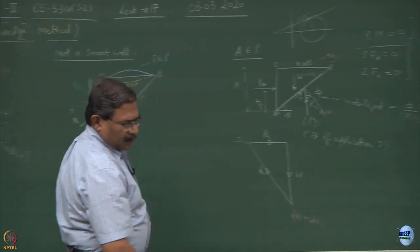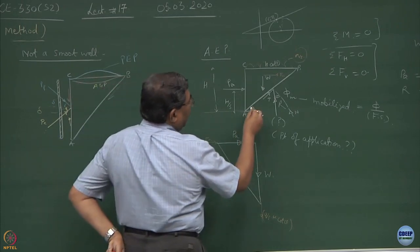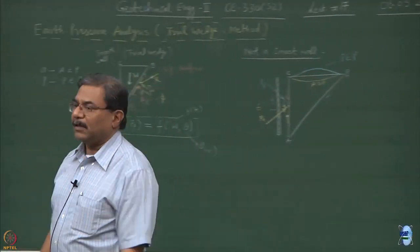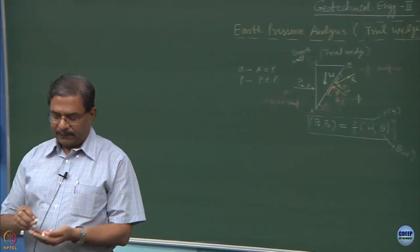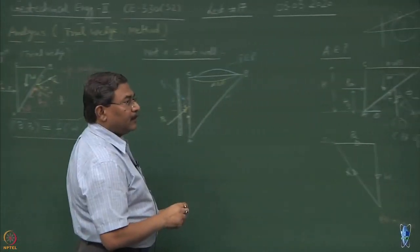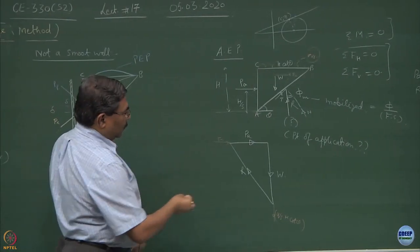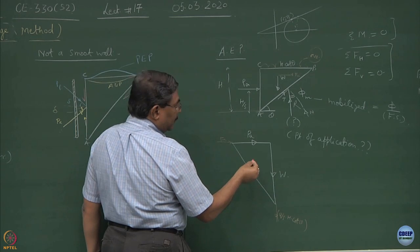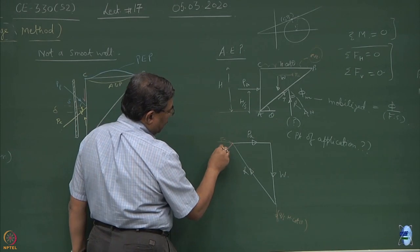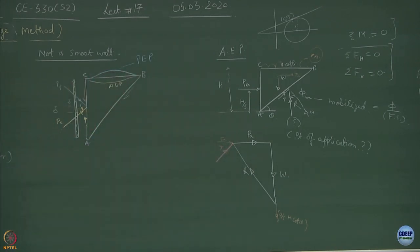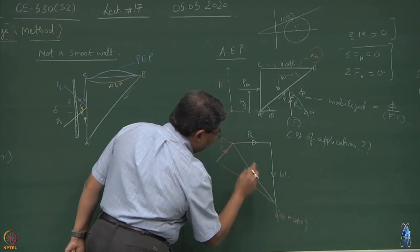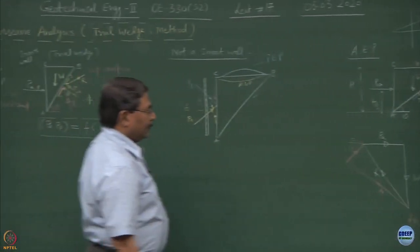Coming back to simple situations: can you compute the angle between W and R? The force diagram is still not complete — normal stress and shear stress are the components of R. If I draw it like this, this is your tangential force, and joining it like this gives the normal component. The angle between them is 90 degrees.